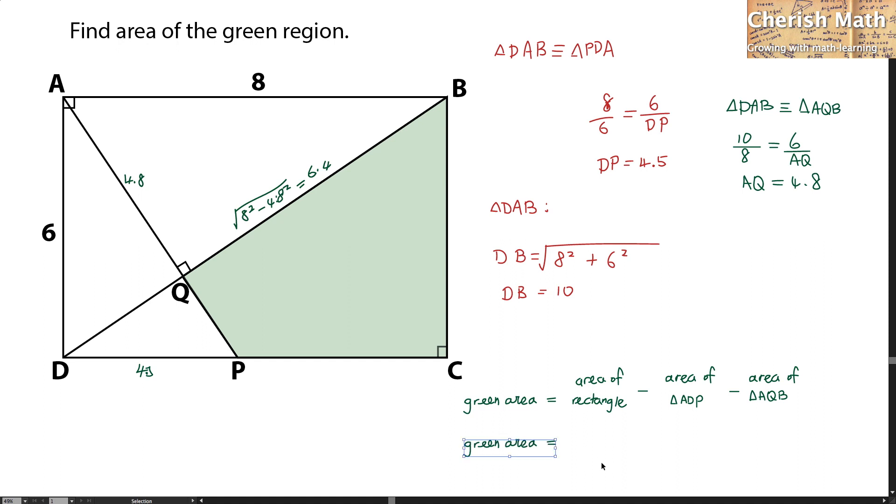So now, the green area is equal to 8 times 6 as the area of the rectangle minus 1 half times 4.8 times 6.4 as the area of triangle ADP minus 1 half times 4.8 times 6.4 as the area of triangle AQB. That is going to give me the green area of 19.14 units squared. And I solved the problem.